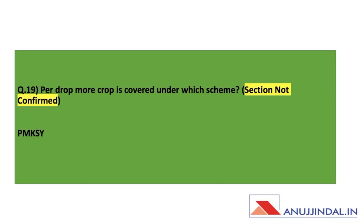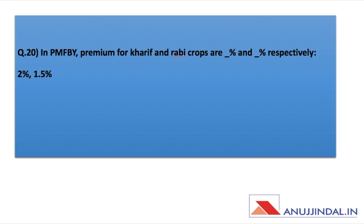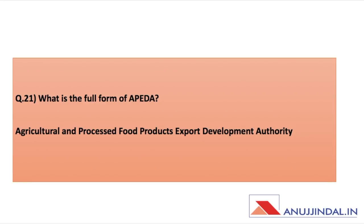Per drop more crop is covered under which scheme? The section is not confirmed, but PM KSY — Pradhan Mantri Krishi Sinchai Yojana — is the answer. Regarding Fasal Bima Yojana, a question was expected and was asked. The premium for Kharif crops is two percent and for Rabi crops it is 1.5 percent.